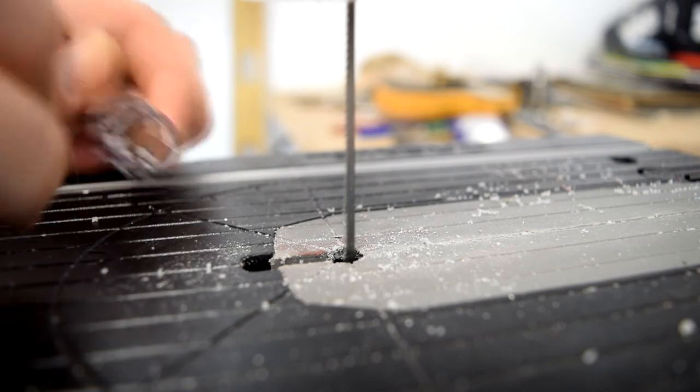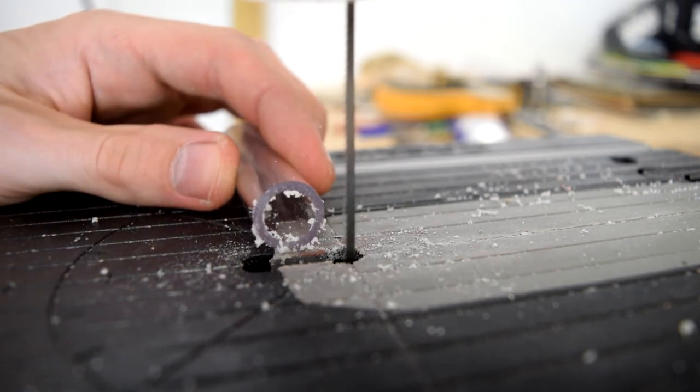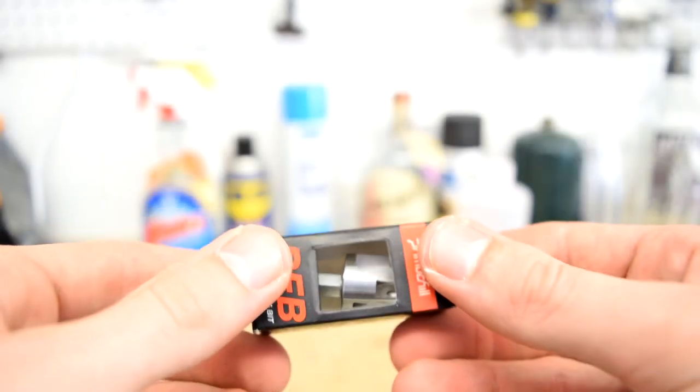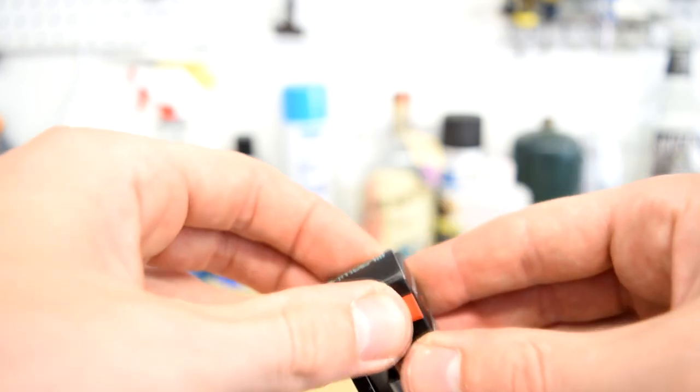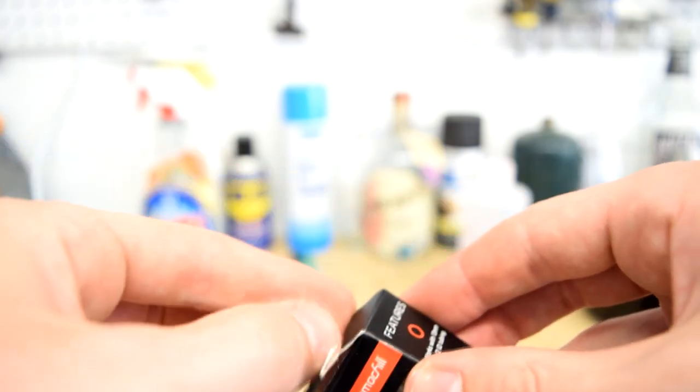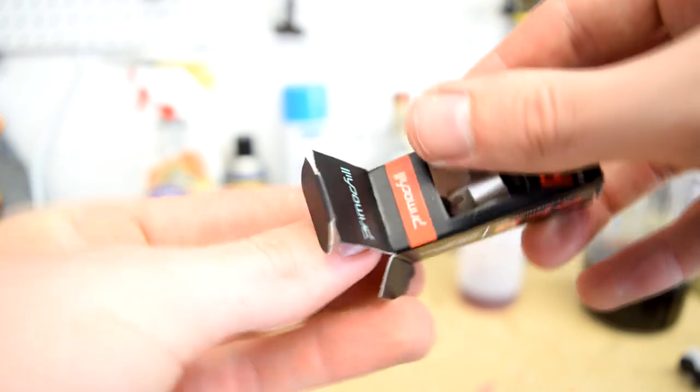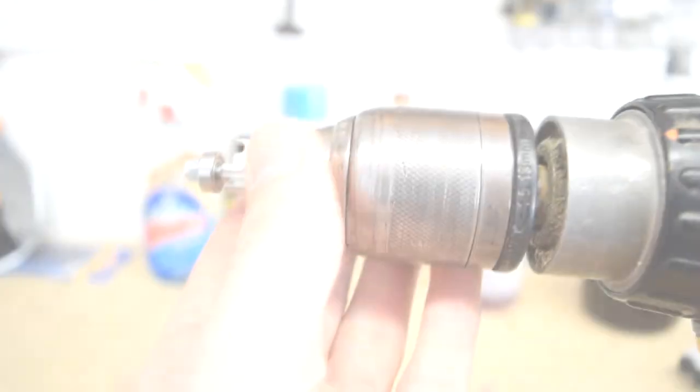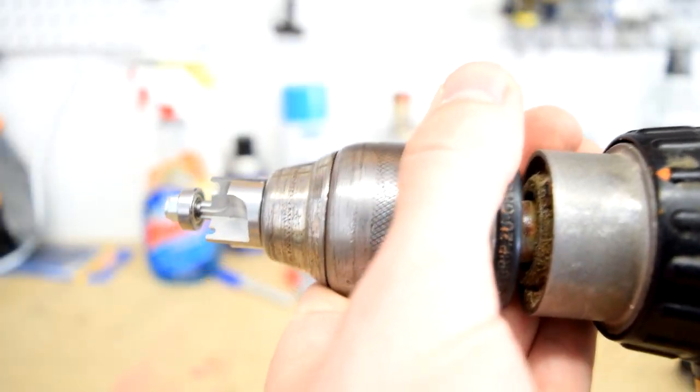As you can see here, the end of the PETG tubing is very rough after it has been cut. First, we'll take the RFP out of the package and install it into the chuck of the drill by loosening it and then tightening it around the shaft of the drill bit.